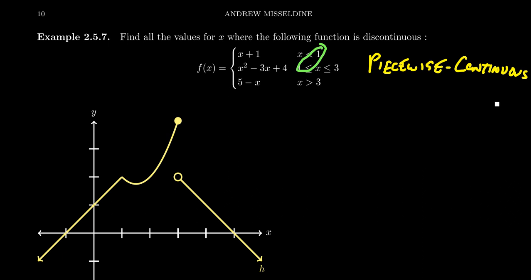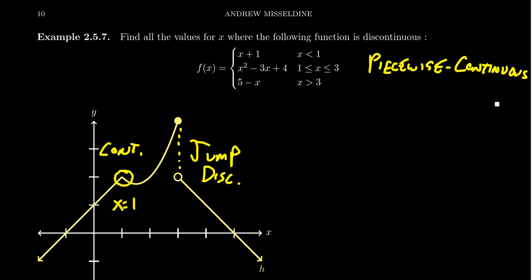Piecewise continuous functions will be continuous at their switching numbers if the pieces touch each other on the graph. When we look at this graphically, we can see that at x equals 1 it'll be continuous because the two pieces touch. But at x equals 3 it'll be discontinuous — there'll be a jump discontinuity there.